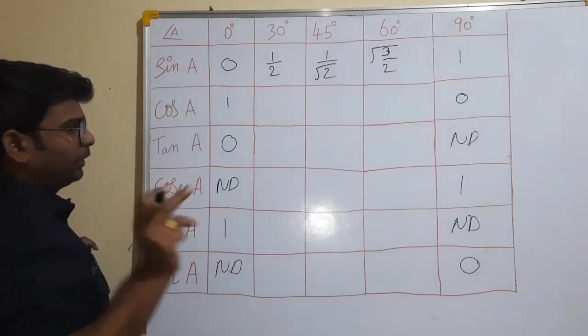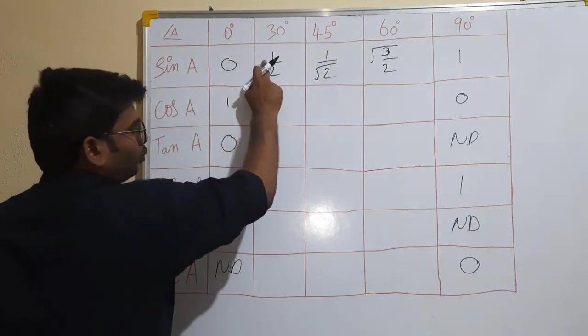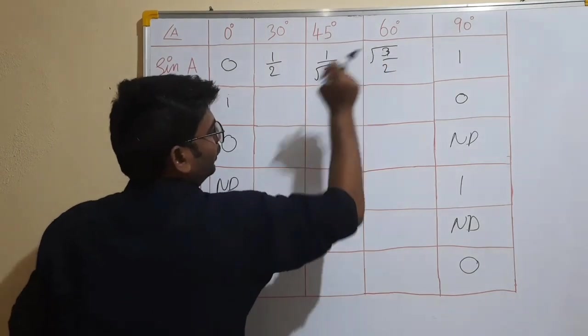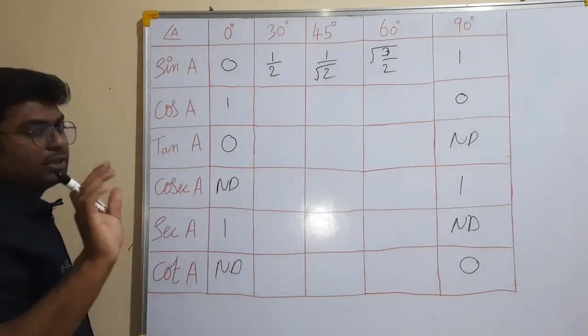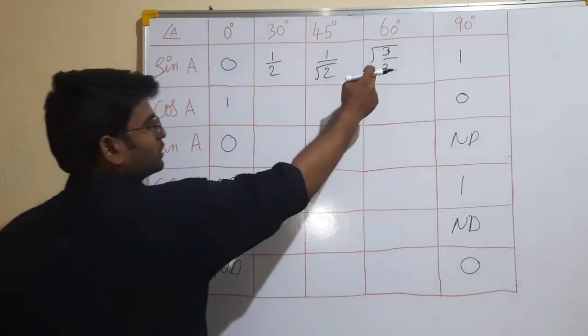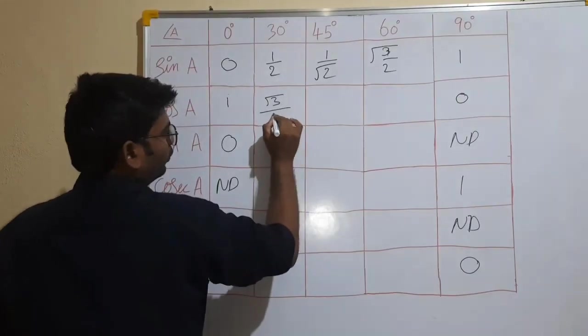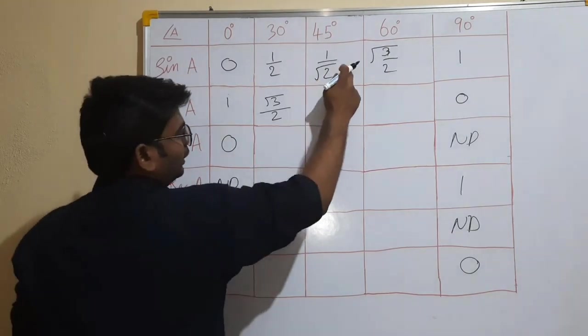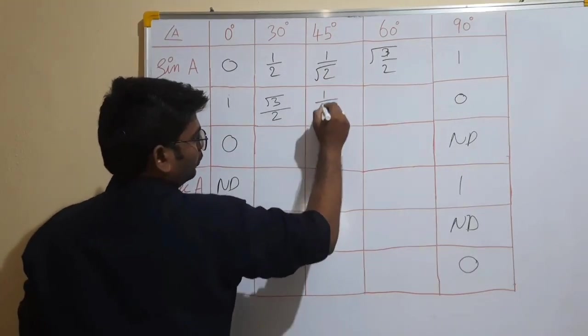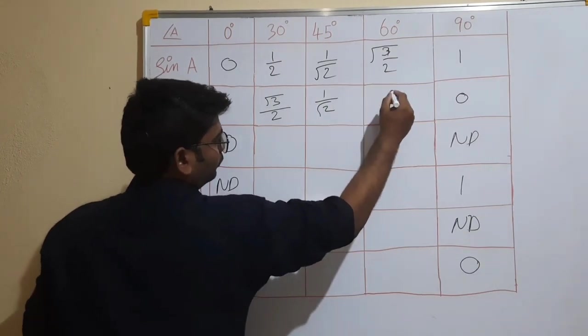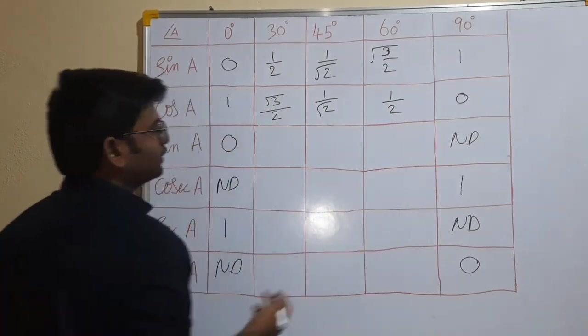Now, I hope we are going to put on first one root, second two roots, third three roots. Next, this is root three by two. Next, this is direct one. Next, this is direct.